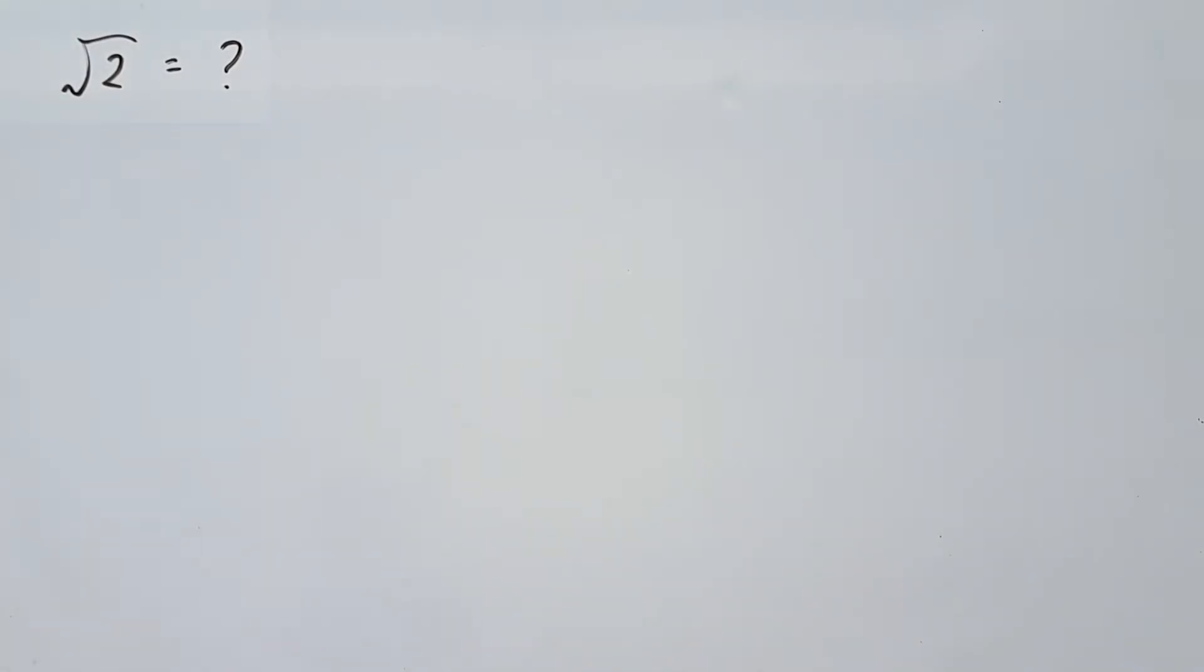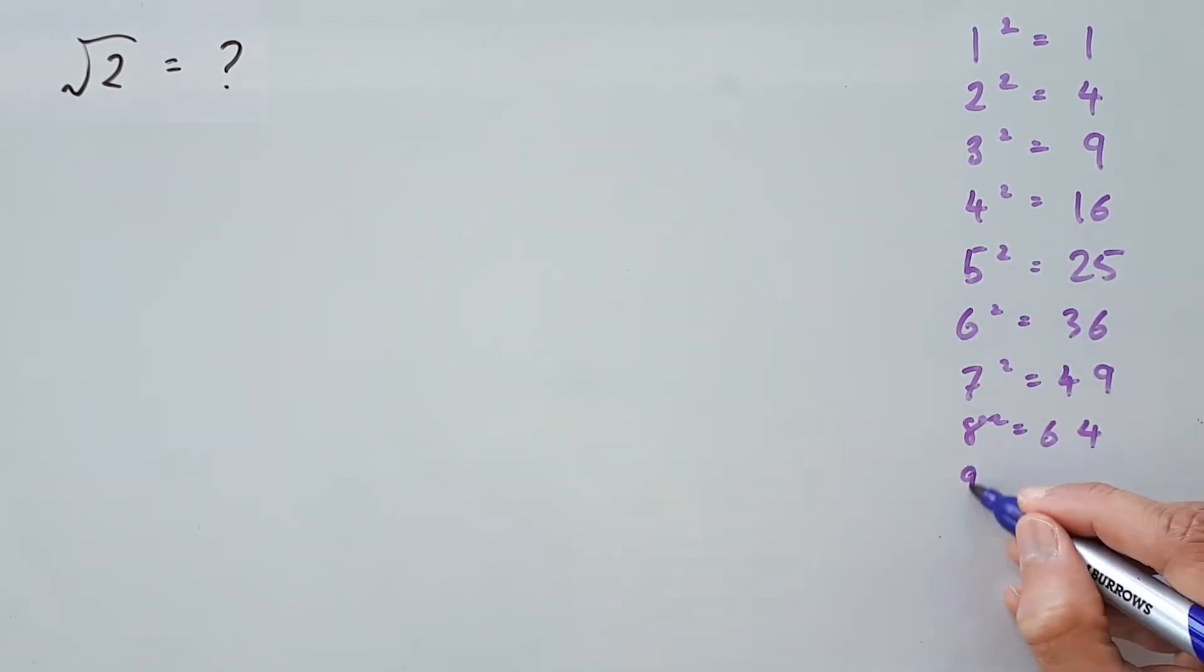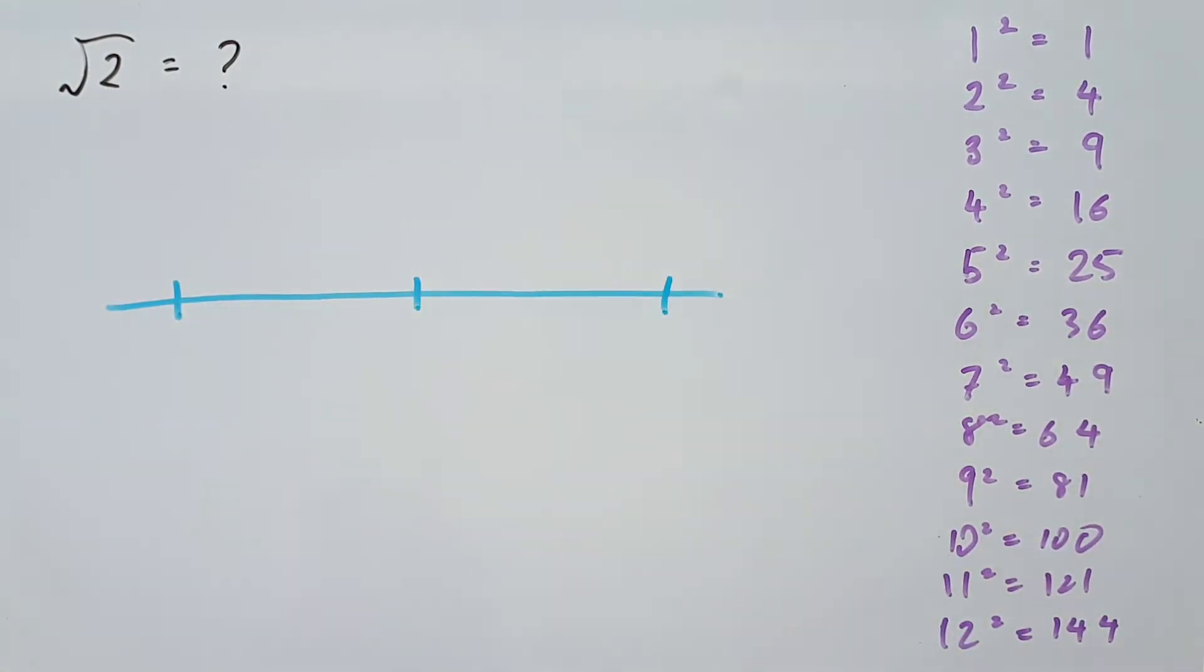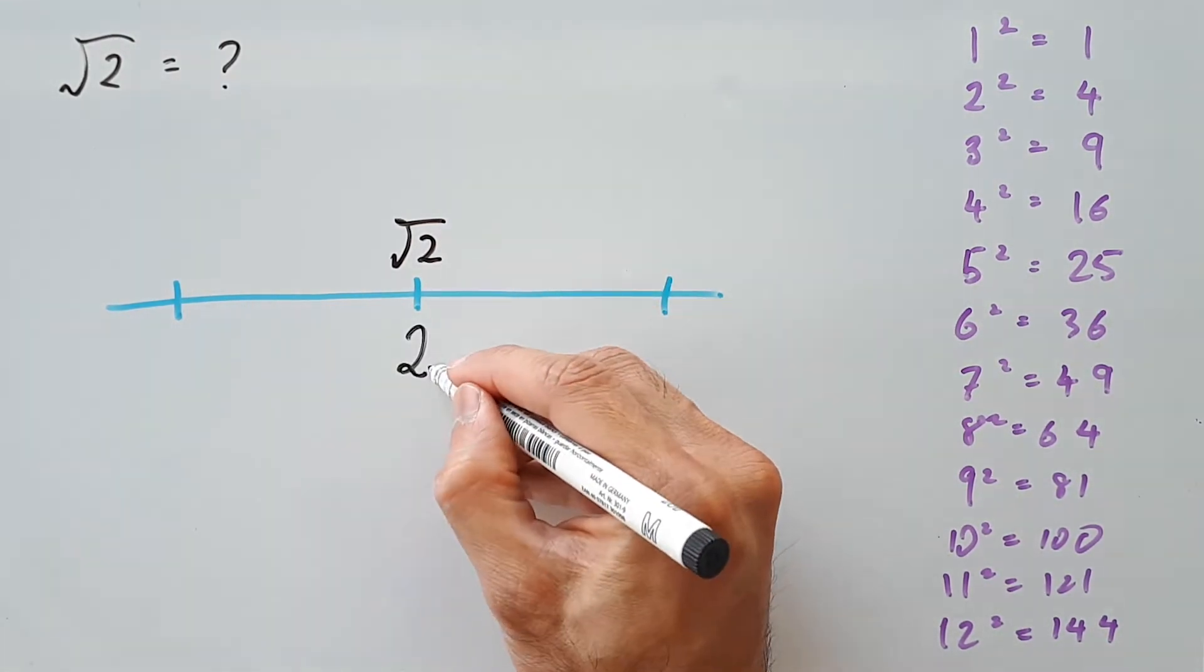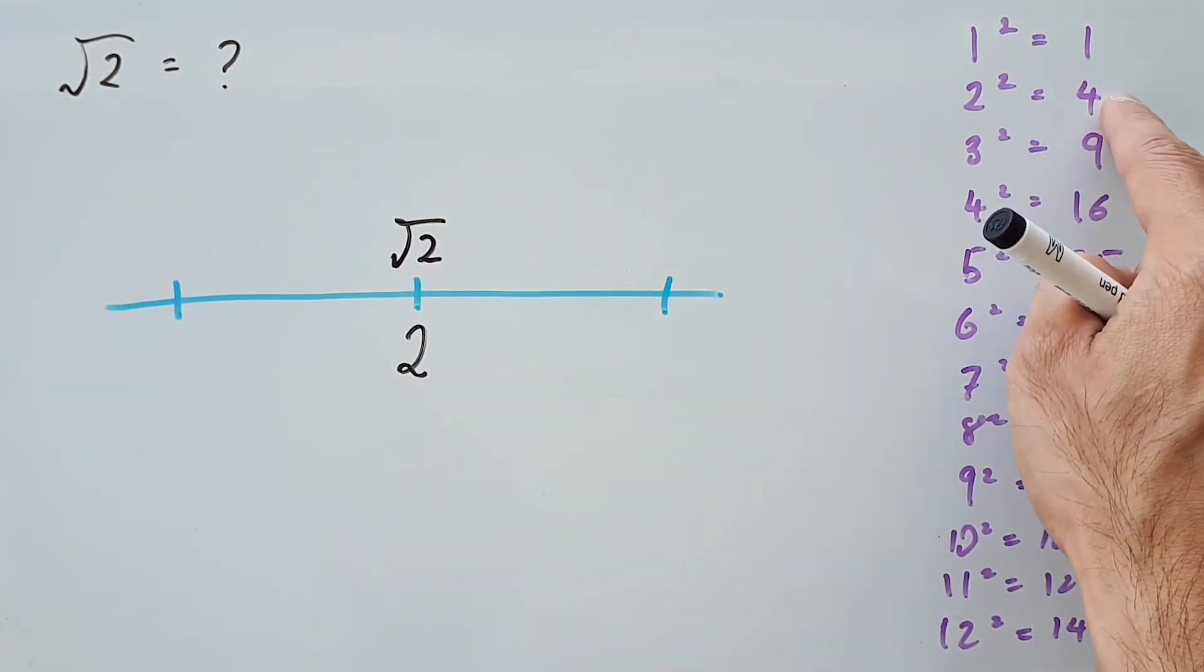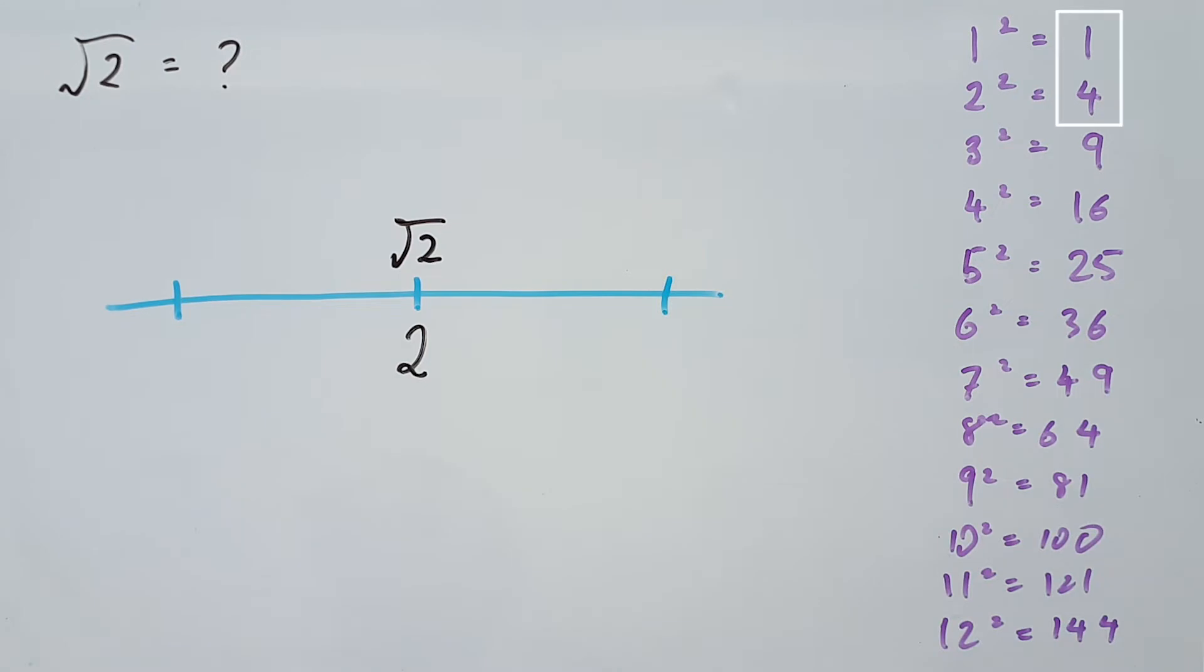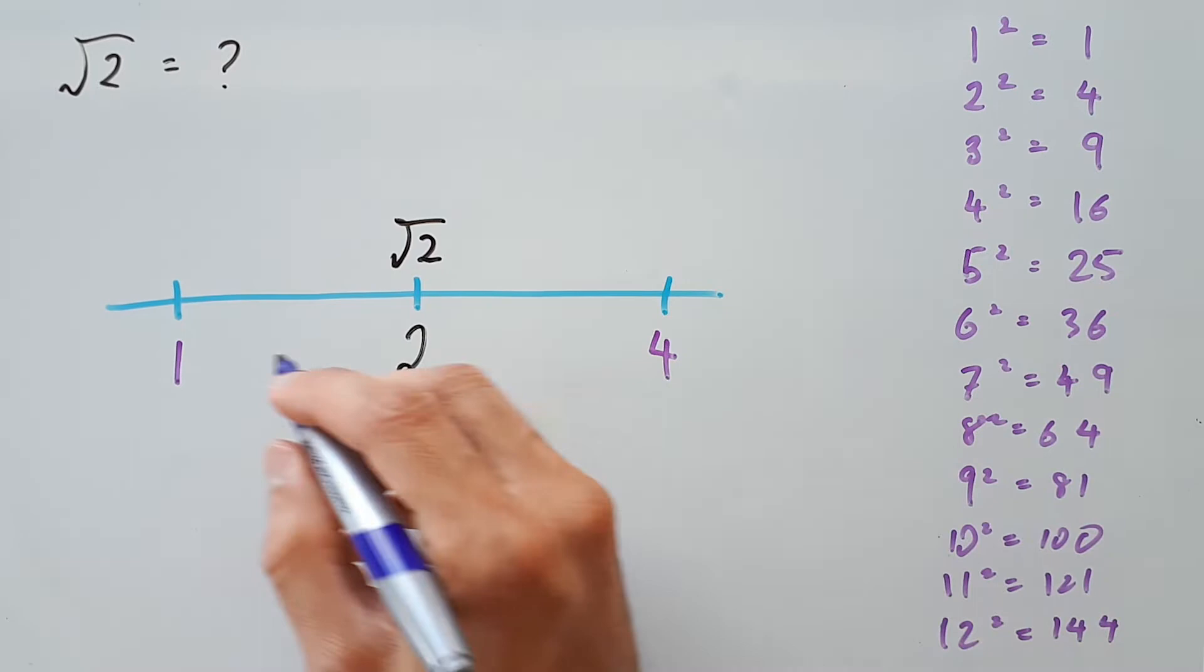Starting off with square root 2, prepare a list of your perfect squares on the side. Draw a number line, marking out square root 2 at the center. Write out number 2 and notice that it's between 1 and 4 in your list of perfect squares. These are your perfect square boundaries for 2, so write them out and find the square roots above them.